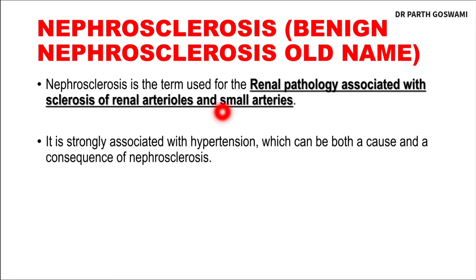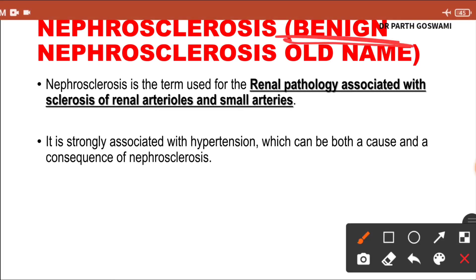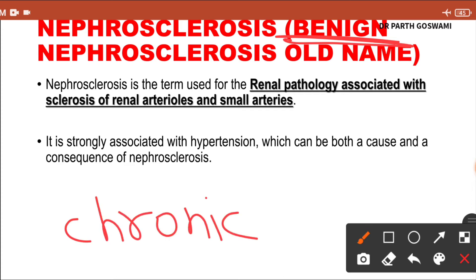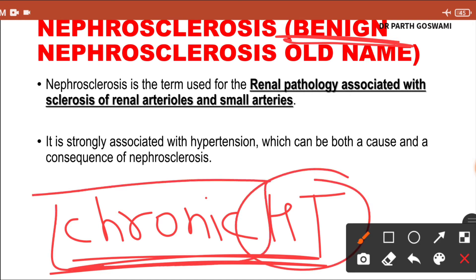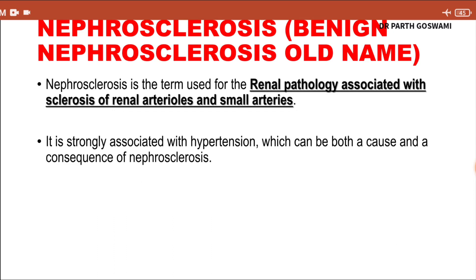The other name is simply nephrosclerosis. The word 'benign' is given because it is seen in the chronic hypertension patient. Here the hypertension is not malignant — it is not much accelerated, like greater than 200 systolic or greater than 120 diastolic. The patient is chronically hypertensive, and that's why the kidney changes are seen, which is known by the name nephrosclerosis.